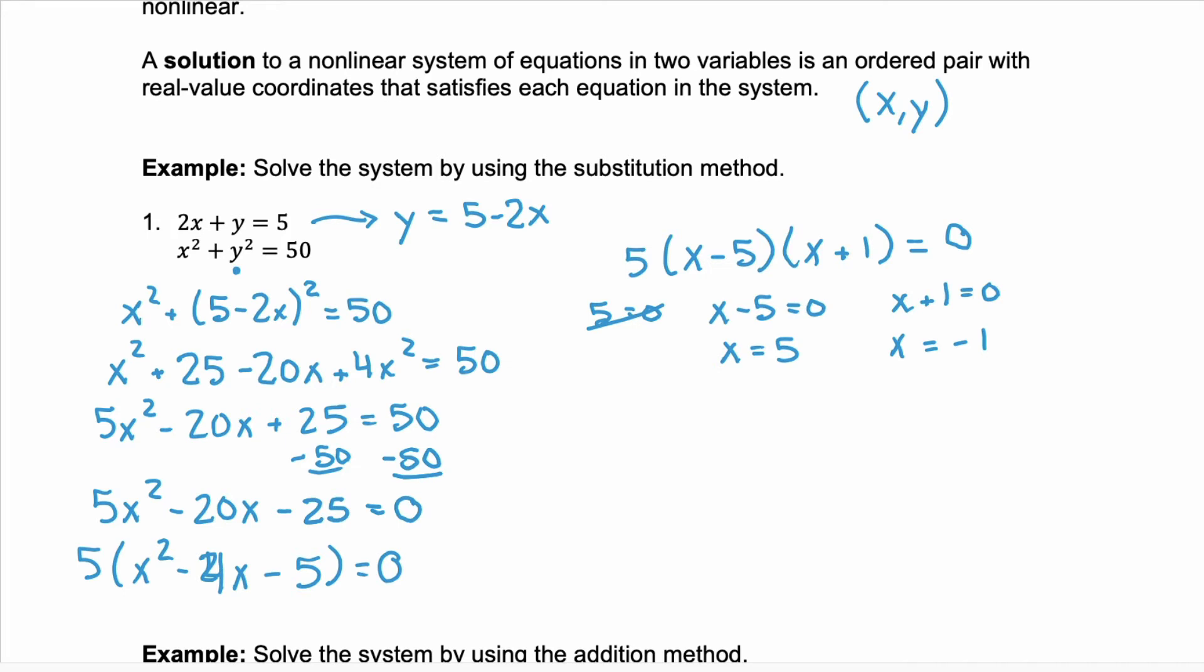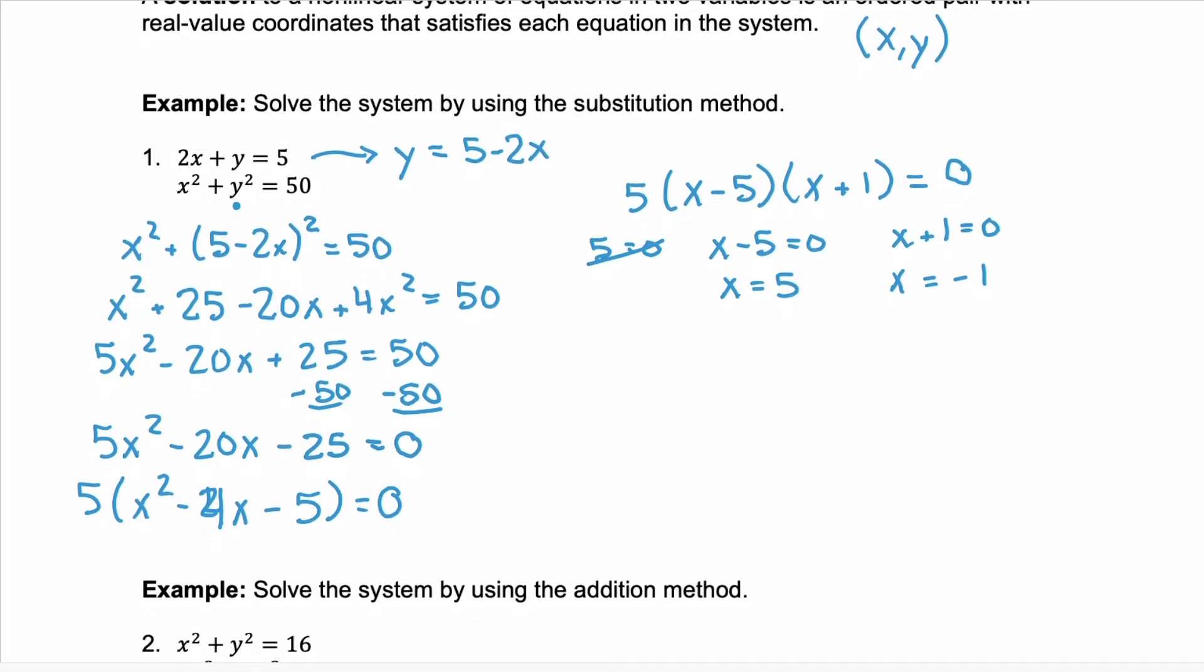Now a solution is an ordered pair, an x, y. We're not done here. Notice that the two equations we have are a line and a circle. That line is going to intersect the circle in at least one point. Here it looks like it's going to intersect in two places.